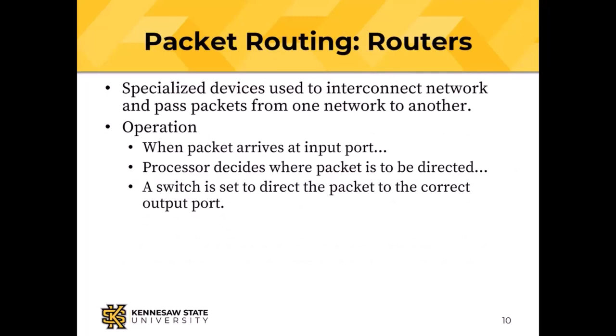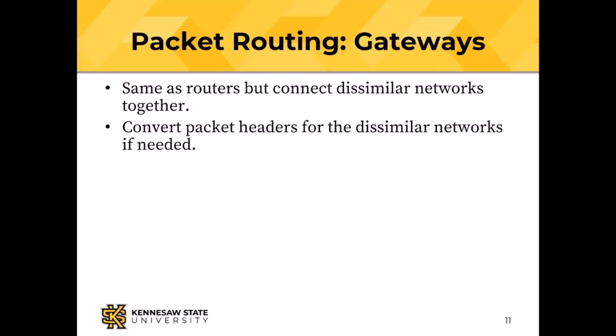Routers are specialized nodes that pass packets from one network to another. A router typically has more than two network interface controllers and decides which port to send a packet out on, selecting the route. A packet arrives at an input port, the processor decides where it should go, and it is sent on the correct output port. A gateway performs the same functions as a router but connects dissimilar networks — for example, connecting an Ethernet to a Starlink satellite connection — and can convert packet headers for dissimilar networks.